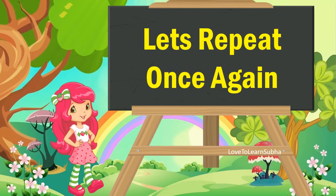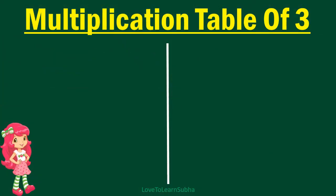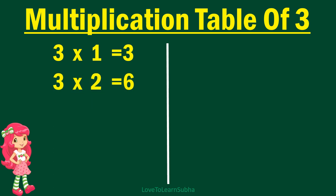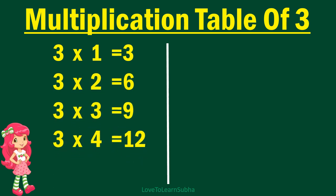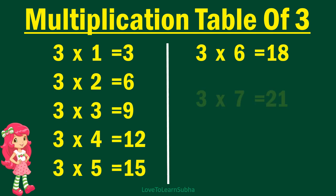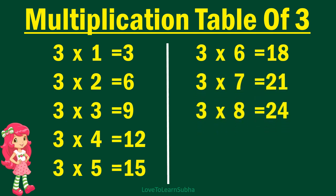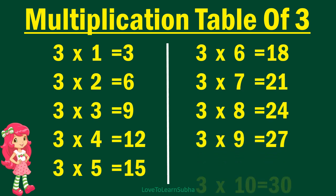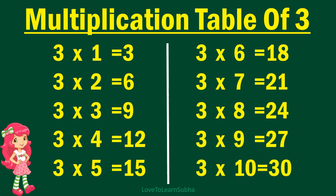Now, let's repeat it once again. 3 1s are 3, 3 2s are 6, 3 3s are 9, 3 4s are 12, 3 5s are 15, 3 6s are 18, 3 7s are 21, 3 8s are 24, 3 9s are 27, 3 10s are 30.